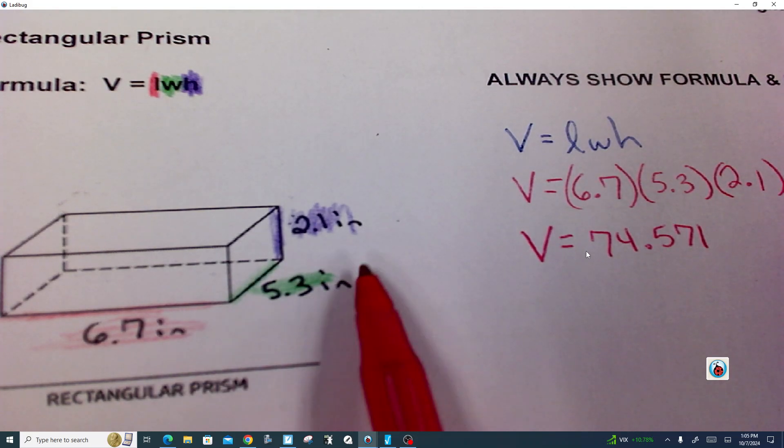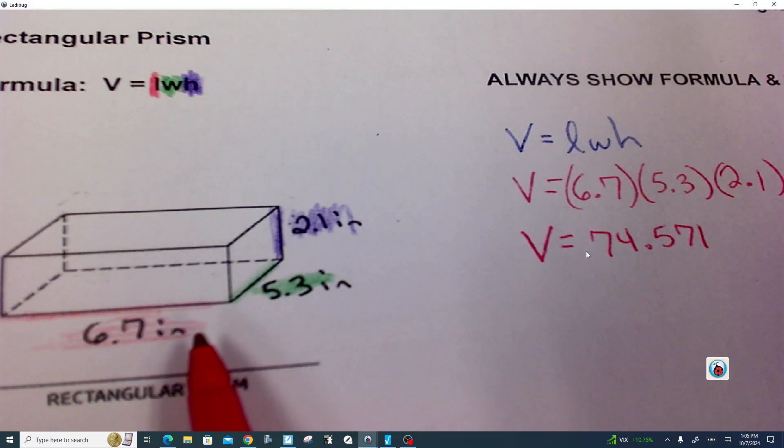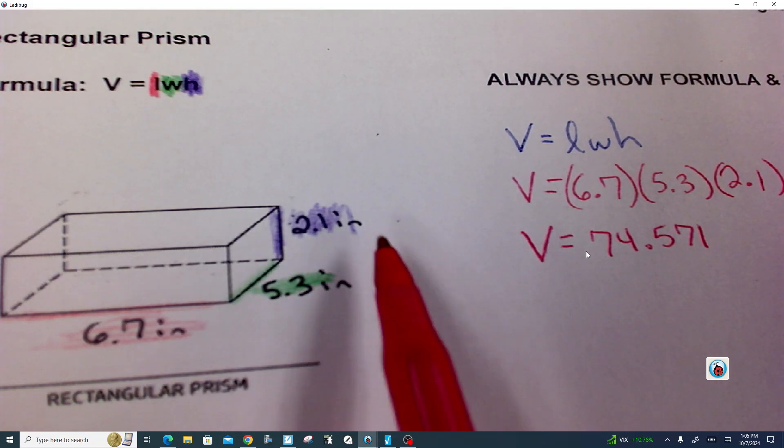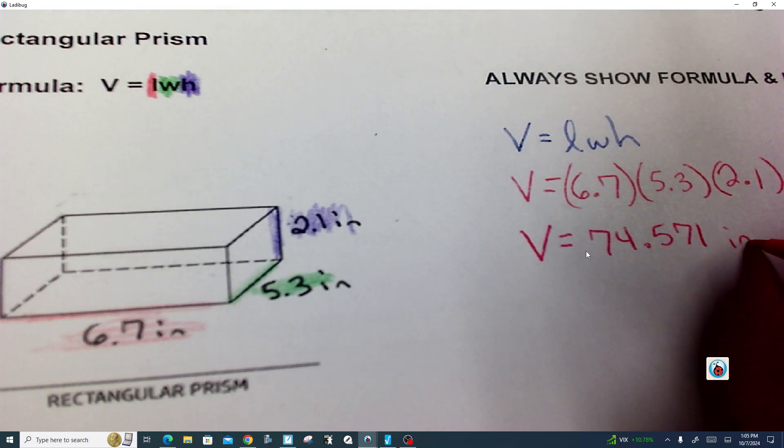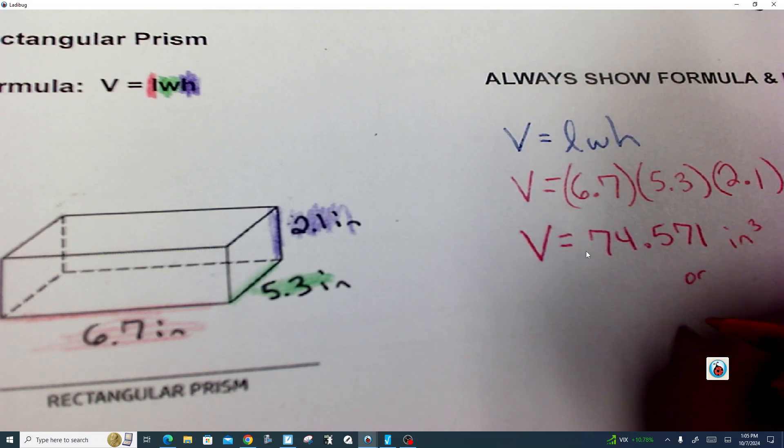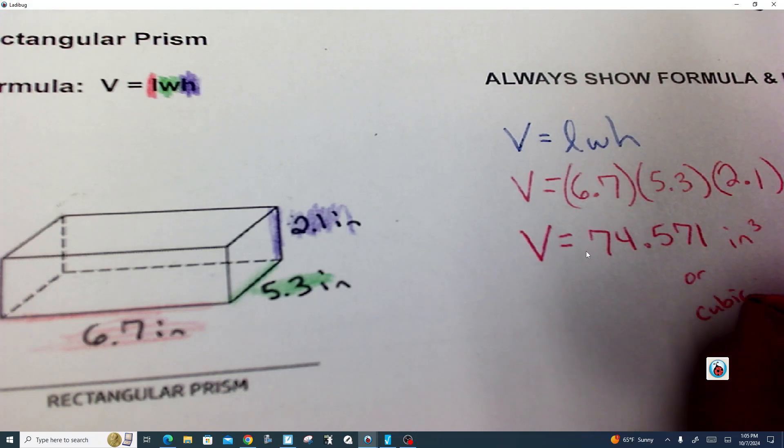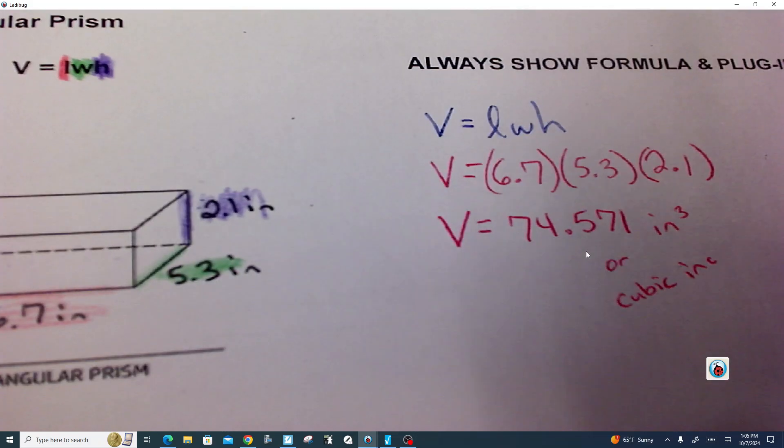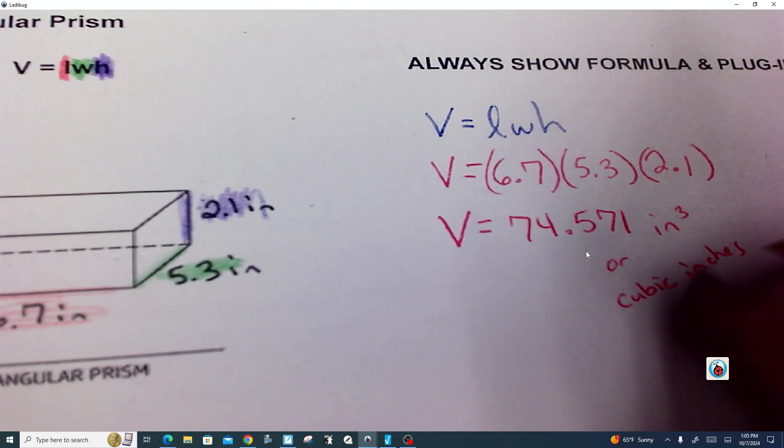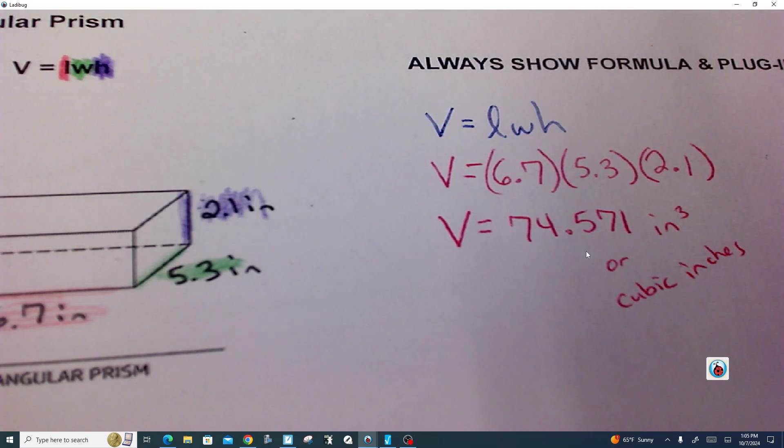This is inches times inches times inches. So since we're multiplying three different inches, this is inches to the third power, or you could say cubic inches. Either one, and that is how you find the volume of any rectangular prism.